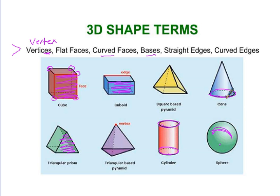Here we have one base. Circles are not polygons because they don't have straight edges, and bases are things that are not polygons.